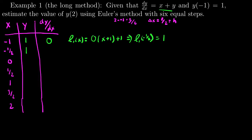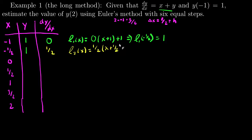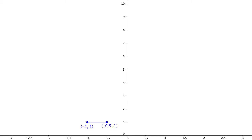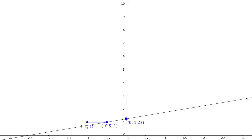Now I go through and do the process again. To get dy/dx I add x plus y, and I get one half. So my second linear approximation is one half·(x + one half) + 1. I take another step and evaluate that line at 0: L₂(0) = one half times one half equals one fourth, plus 1 is 5 fourths. That gives me the point (0, 5/4). I made my second tangent line, took a half-unit step to the right, and connected it up.